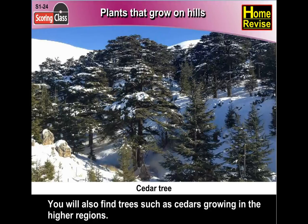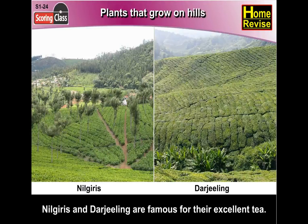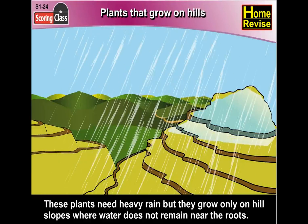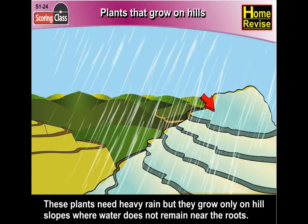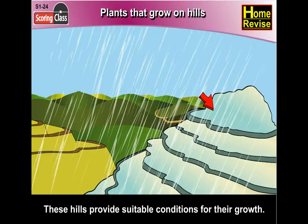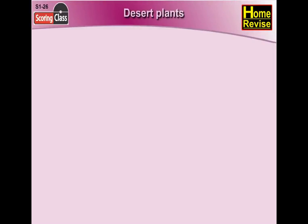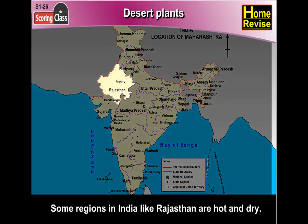You will also find trees such as cedars growing in the higher regions. Tea plants also grow in hilly regions; Nilgiris and Darjeeling are famous for their excellent tea. These plants need heavy rain but grow only on hill slopes where water does not remain near the roots. These hills provide suitable conditions for their growth.